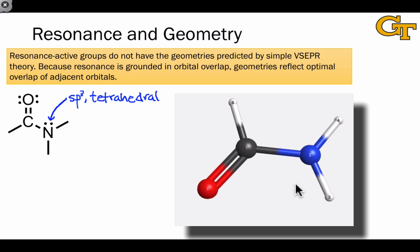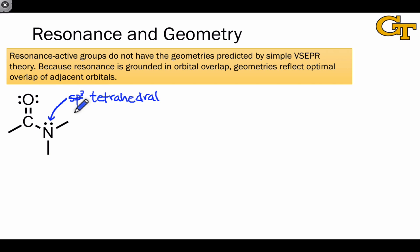However, the quantum mechanically optimized structure for this molecule reveals something interesting. The nitrogen is actually trigonal planar. Notice the 120 degree bond angle and the planarity of the three atoms surrounding nitrogen. This implies that the hybridization at this nitrogen atom is actually sp2, and that its geometry is not trigonal pyramidal but is actually trigonal planar.